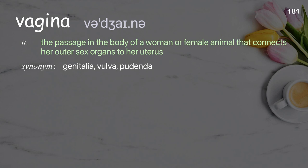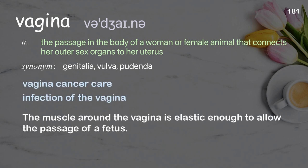Vagina: the passage in the body of a woman or female animal that connects her outer sex organs to her uterus. Examples: vagina cancer care, infection of the vagina. The muscle around the vagina is elastic enough to allow the passage of a fetus.